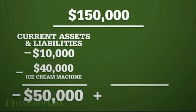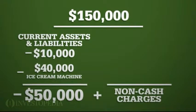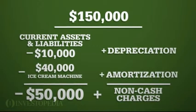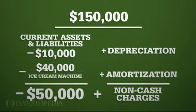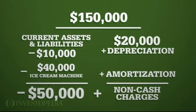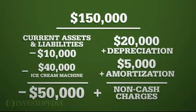Finally, Al will add back any non-cash charges that reduced his net income, such as depreciation or amortization — plus $20,000, plus $5,000.